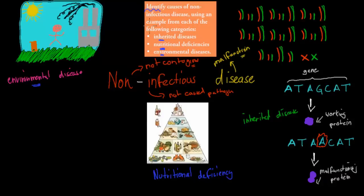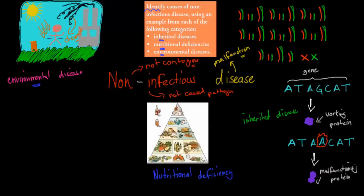Environmental disease is caused by something in a person's environment. For example, UV rays from the sun can cause skin cancer. Chemicals from factories can also give us different types of diseases. Even tripping over an obstacle and breaking your leg would be an example of a physical environmental disease — it's the environment itself causing harm.